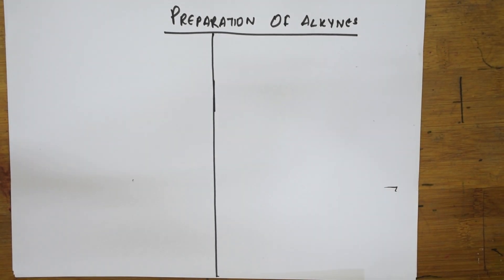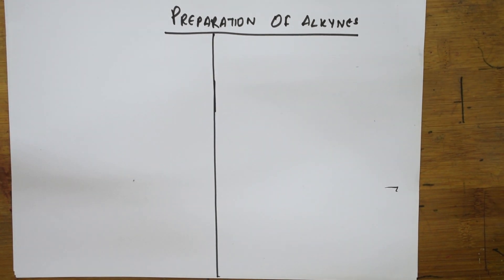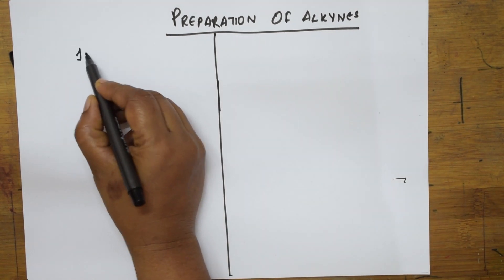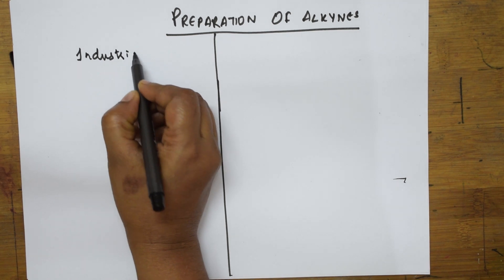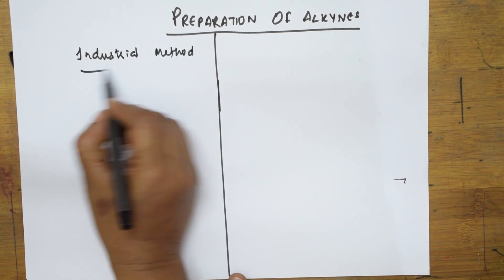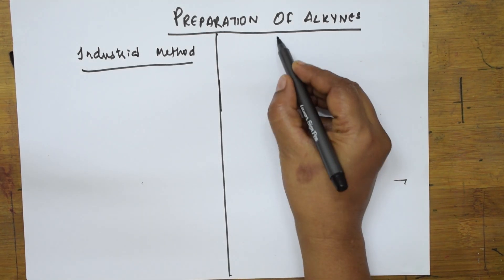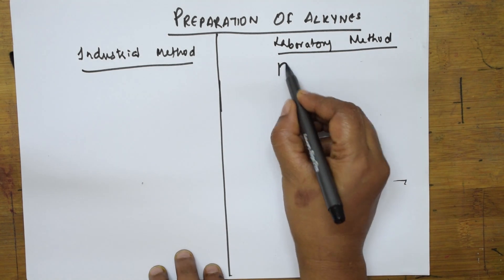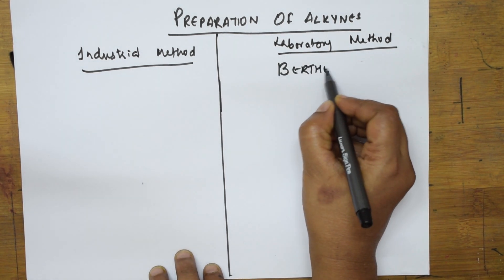Welcome back students. Today's session we are going to learn the preparations of alkynes. We have completed the alkenes chapter. Now let's start with preparations of alkynes. We have already discussed the different methods in the previous video. Now let us start with the first type — the industrial method of preparation of alkynes. You also have a lab method, such as the electrolysis process, and a synthesis called Berthelot synthesis.